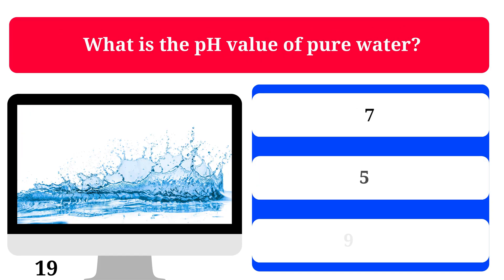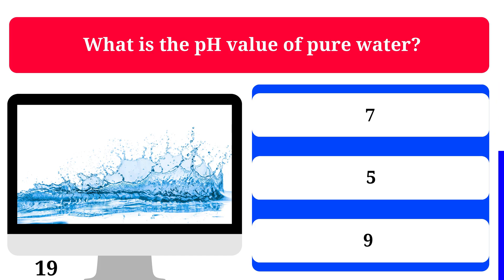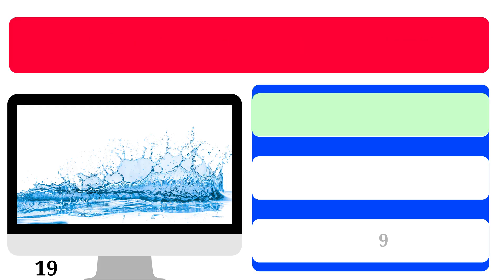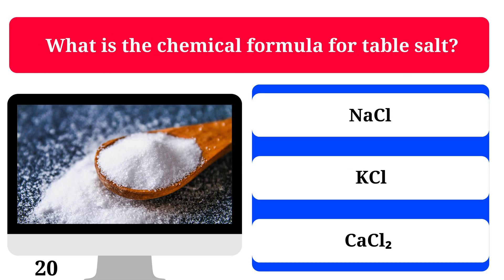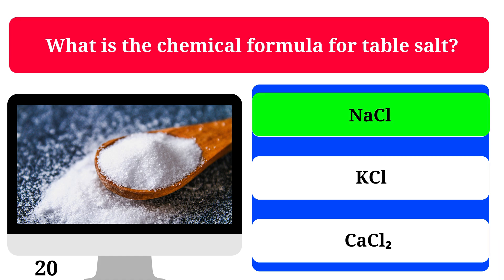What is the pH value of pure water? 7, 5, or 9? The correct answer is 7. What is the chemical formula for table salt? Sodium chloride, KCl, or calcium chloride? The correct answer is sodium chloride.